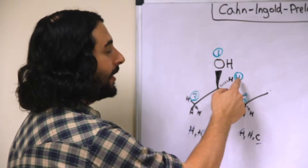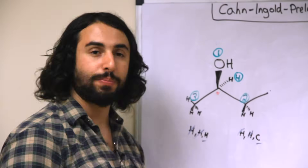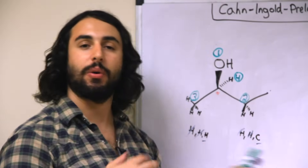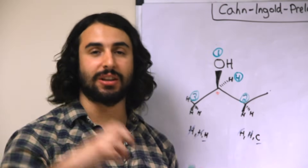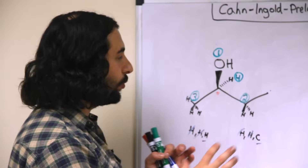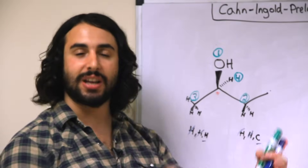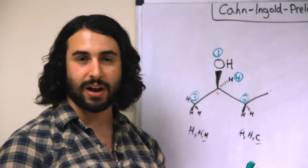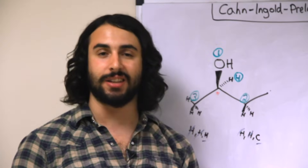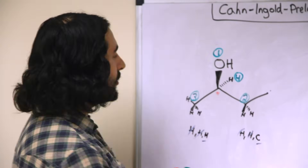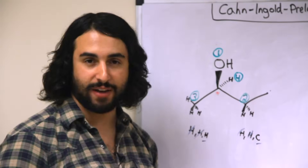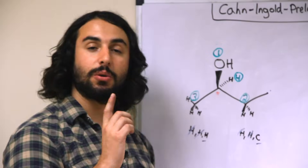Just looking directly at this molecule, we are already in the privileged perspective to assign absolute configuration. If that weren't the case — if the number four group was in the plane of the board or coming towards us — we would have to either redraw the molecule, rotate it in our minds, or use some other trick, which we'll discuss later.